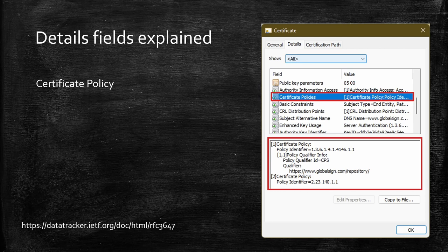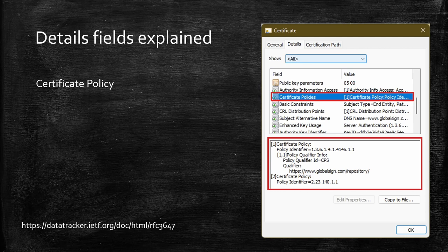The next field we have is certificate policy. A certificate policy is simply a statement given by a certificate authority. It describes all security measures that must be followed by a subject before a certificate can be issued to them. This statement by a CA clearly states how a subject would be verified, what they are allowed to do with those certificates, and under what circumstance a CA may decide to revoke their certificate. It also includes various security policies that a subject should implement. Along with certificate policy, a CA also includes something called CPS, or certification practice statement. A certificate policy discloses what a subject should do, and a CPS discloses how they should do it.